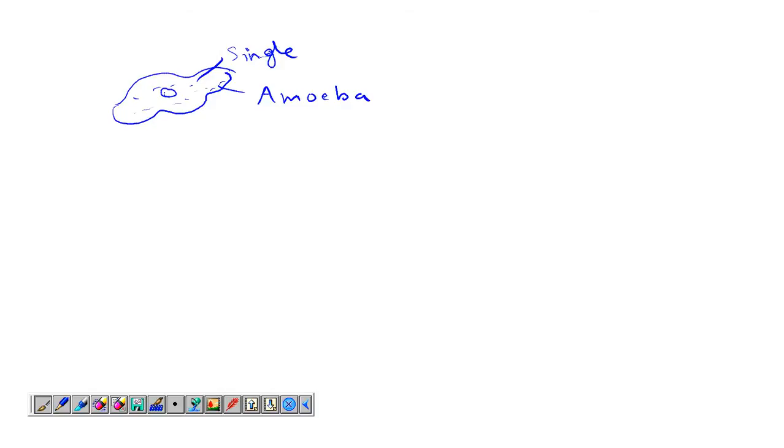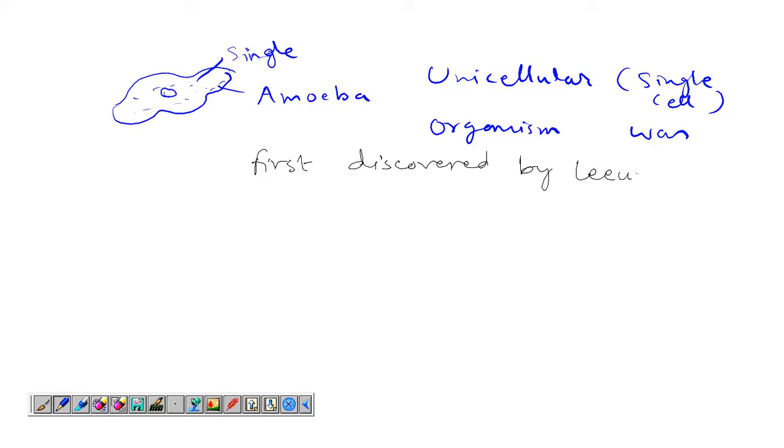So, a unicellular, meaning single cell organism, was first discovered by Leeuwenhoek.